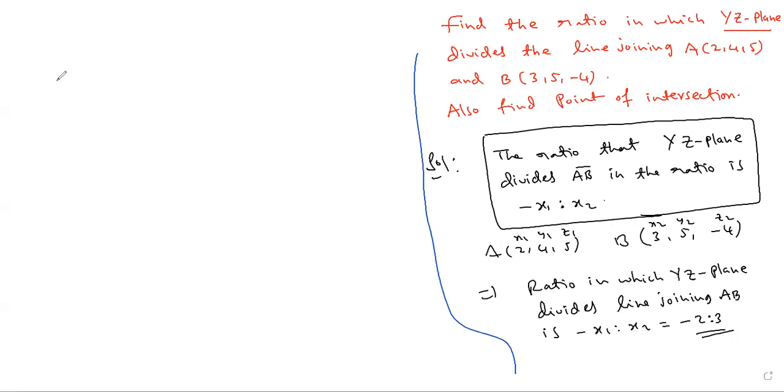Now the point which divides A 2, 4, 5 and capital B is 3, 5 minus 4 in the ratio minus 2 is to 3. So here M is minus 2, N is 3. X1, Y1, Z1 already. What is point of intersection? Section form.